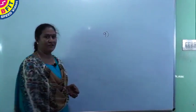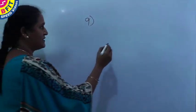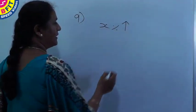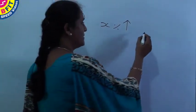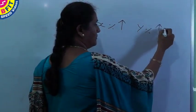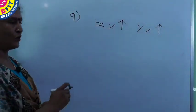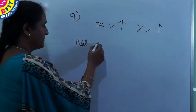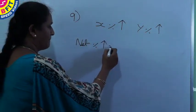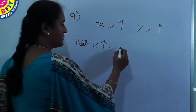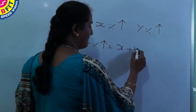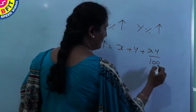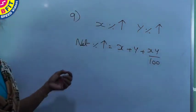So whenever a value is increased by X percent and again the value is increased by Y percent, to get the overall increased percentage, that is the net percentage increase, using X plus Y plus XY by 100, we get the single increase.